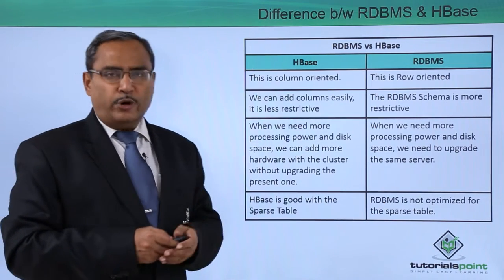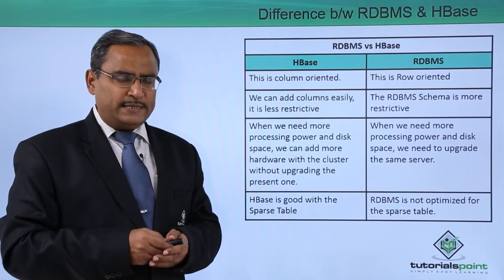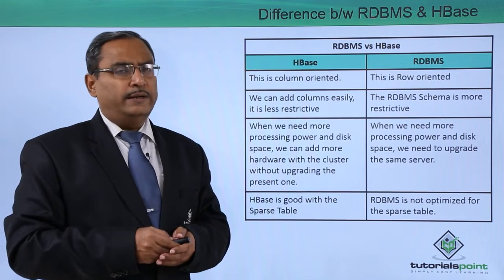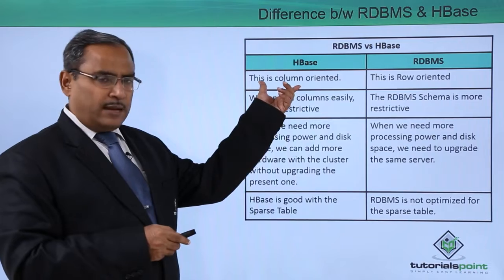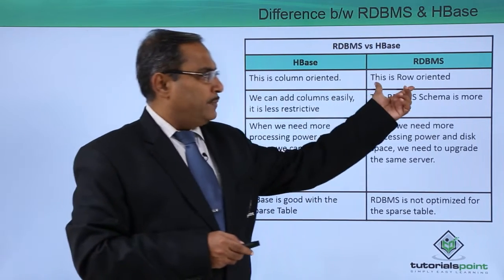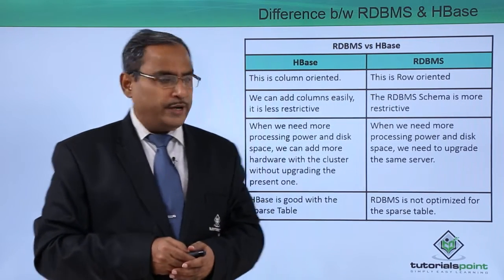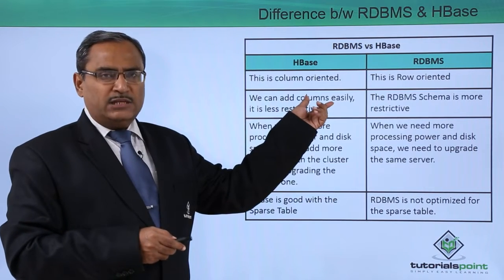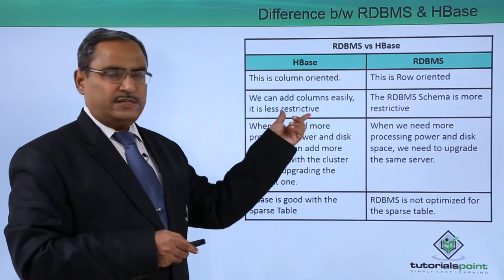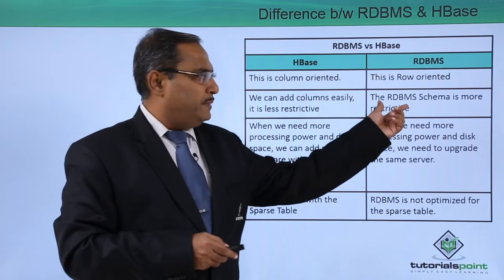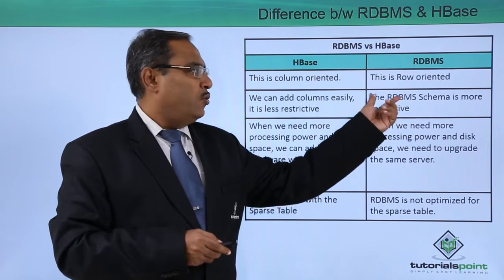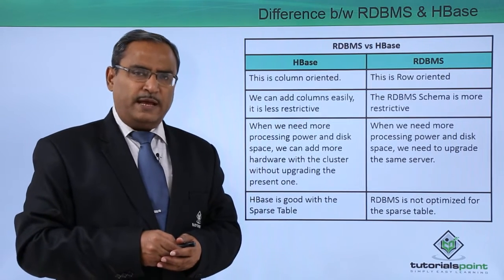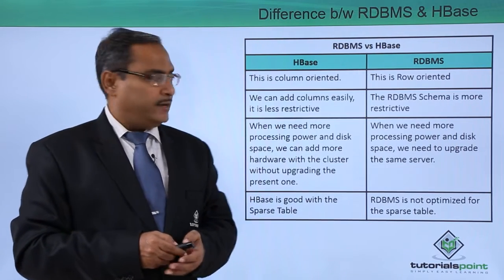HBase is column oriented — we know that HBase is a column oriented NoSQL non-relational distributed database. In case of RDBMS, it is row oriented. In case of HBase, we can add columns easily as and when required, so it is less restrictive. But in case of RDBMS, restriction is very high while adding columns because the schema is more restrictive and schema is static.